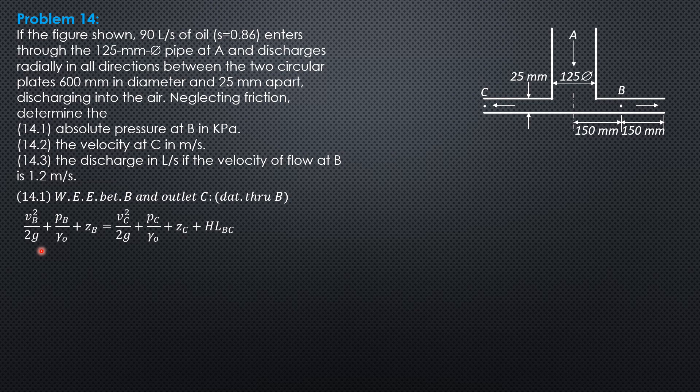For velocity head at B, to help you visualize the situation, QA equals QB equals QC. The cross-sectional area at C is the lateral area of a right circular cylinder, which equals circumference 2πR times thickness, which is 25 mm. Therefore, 0.09